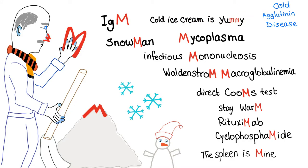A better mnemonic: IgM is a pentamer, which looks like snowflakes. So IgM is cold. The mnemonic is: IgM — snowman — mycoplasma — mono — Waldenström macroglobulinemia — direct Coombs test. Please stay warm. Use rituximab or cyclophosphamide. The spleen is mine — remember that splenectomy is contraindicated in cold agglutinin disease. Only do splenectomy in the warm subtype, not the cold. So, the spleen is mine.